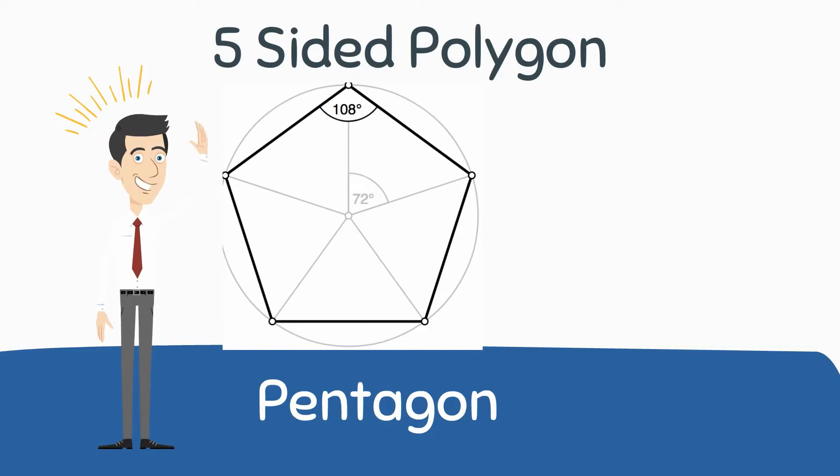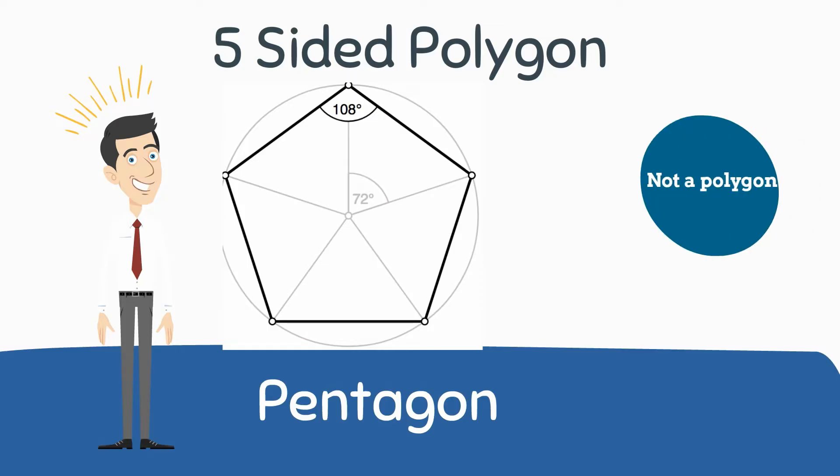A polygon is a 2D shape which is closed and has straight lines. Circles and shapes that include curves are not polygons.